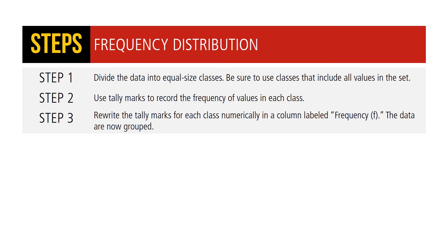To construct a frequency distribution: Step 1, divide the data into equal sized classes. Be sure to use classes that include all values in a set. Step 2, use tally marks to record the frequency of values in each class. Step 3, rewrite the tally marks for each class numerically in a column labeled frequency f. The data is now grouped.